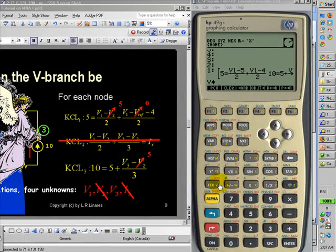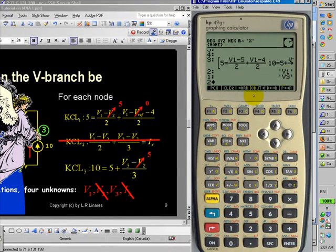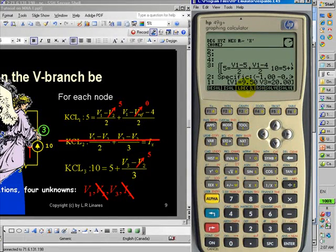I'm ready. Go to the symbolic solver here, ask for a linear solution, and it tells you V1 is 9.5 volts and V3 is 20 volts. And you are ready to continue with your solution.